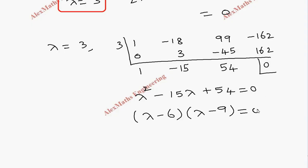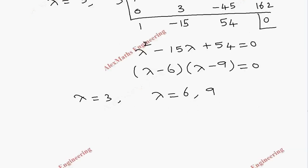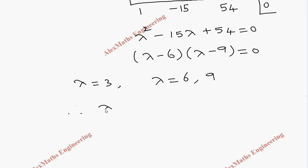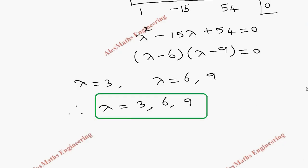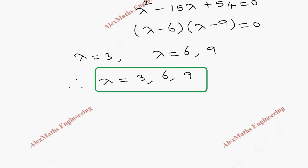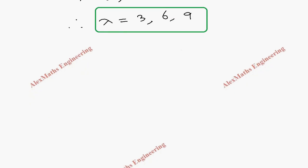From the factored quadratic the values of lambda are 6 and 9, and we already found lambda = 3. Therefore the eigenvalues are lambda = 3, 6, and 9. We have completed the first part — finding the eigenvalues. Now for each value of lambda we have to find the corresponding eigenvector.